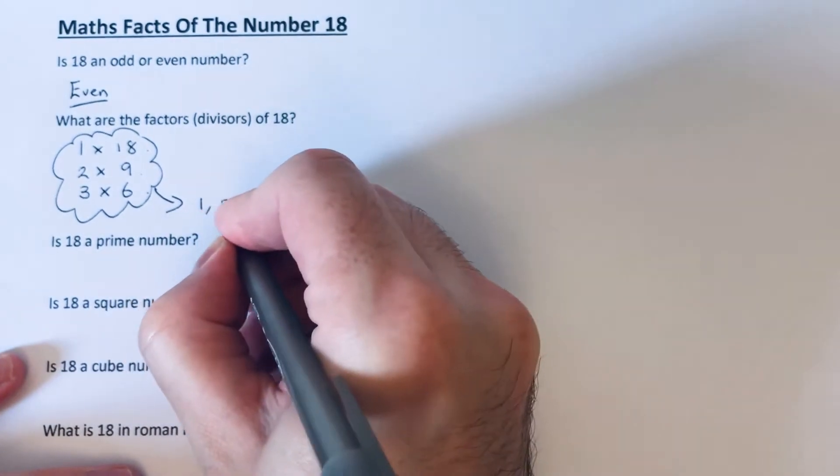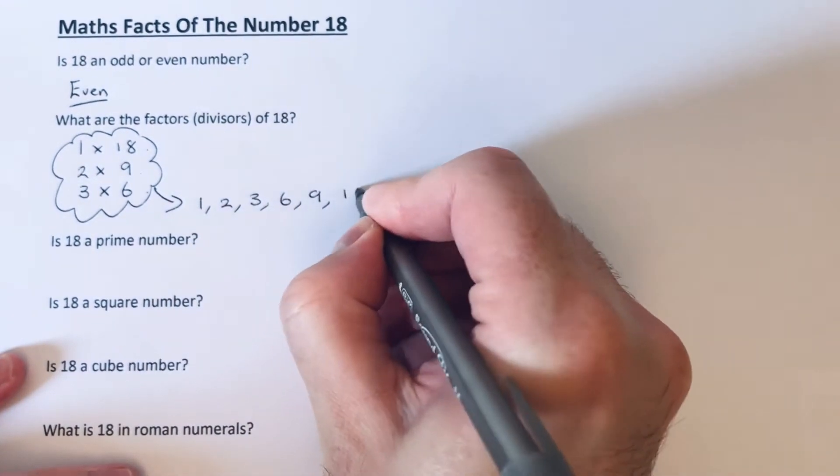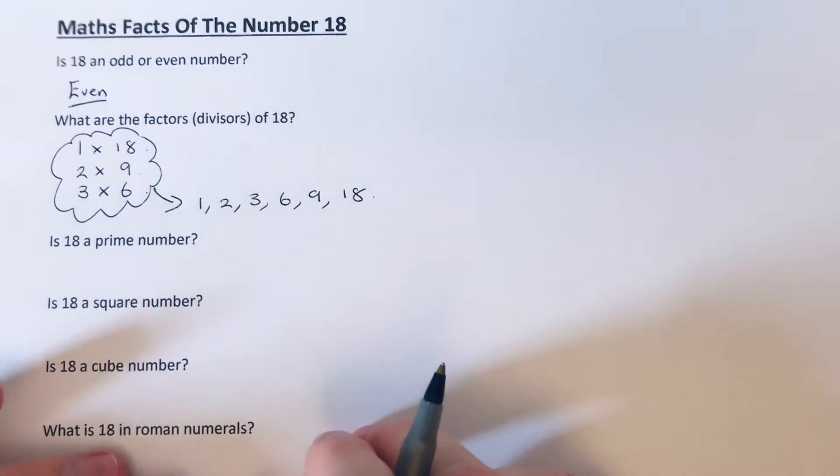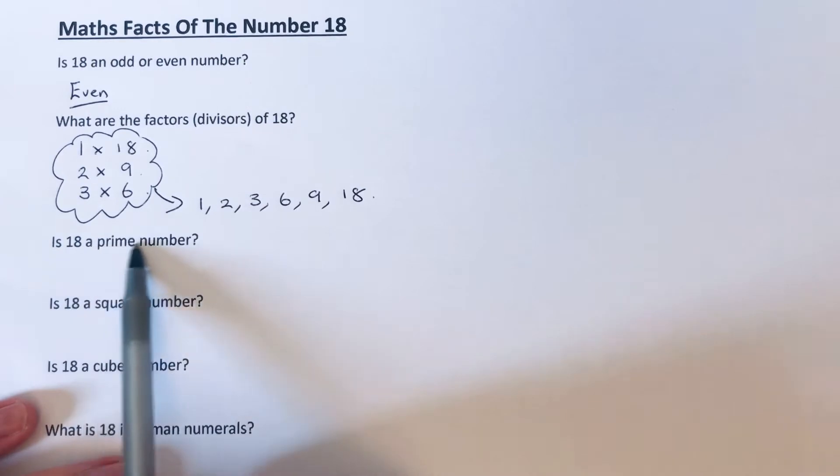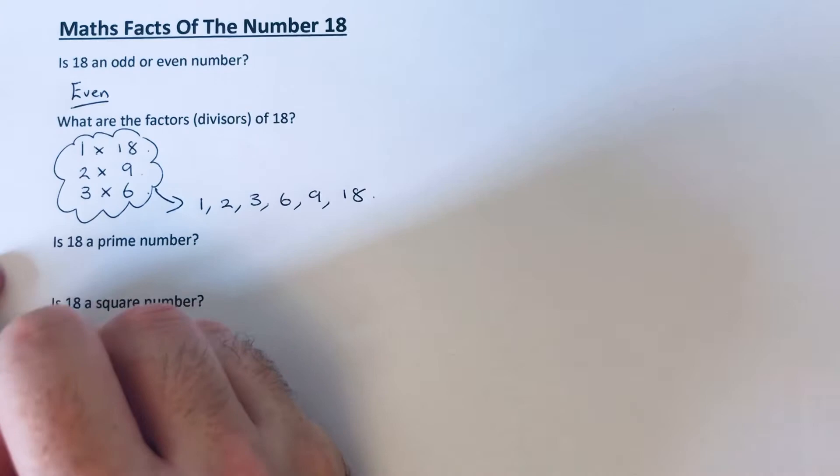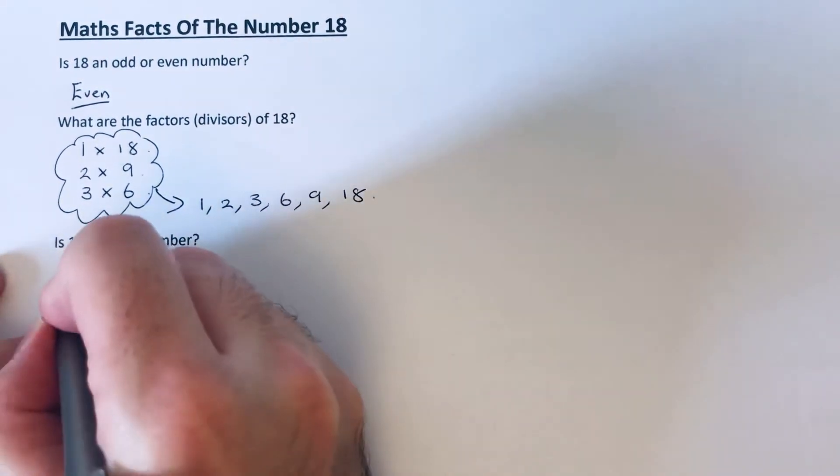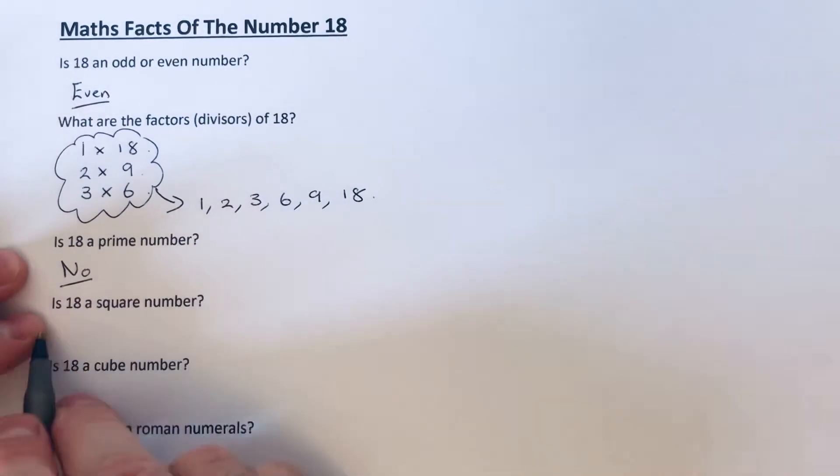So these are all our factors: we've got 1, 2, 3, 6, 9, and 18. So our next question: is 18 a prime number? Well, a prime number has exactly two factors. This one has six factors, so the answer is no.